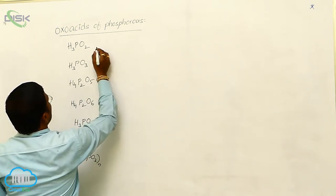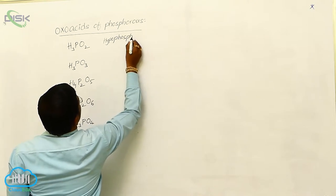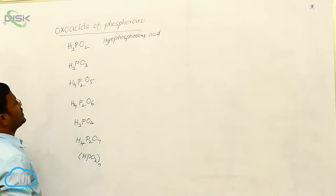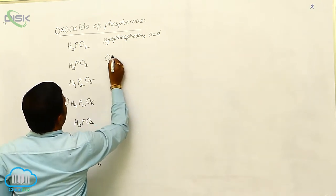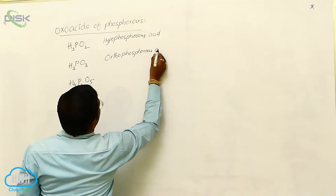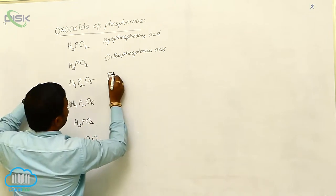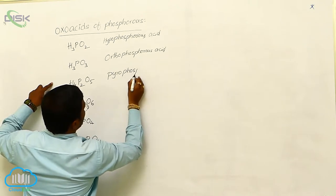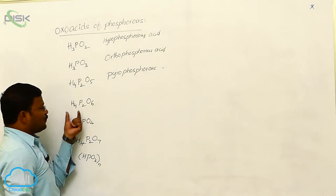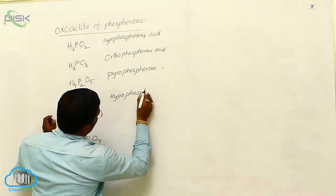The name of the compound H3PO2 is called Hypophosphorous Acid, whereas H3PO3 is called Orthophosphorous Acid. Similarly, H4P2O5 is called Pyrophosphorous Acid.